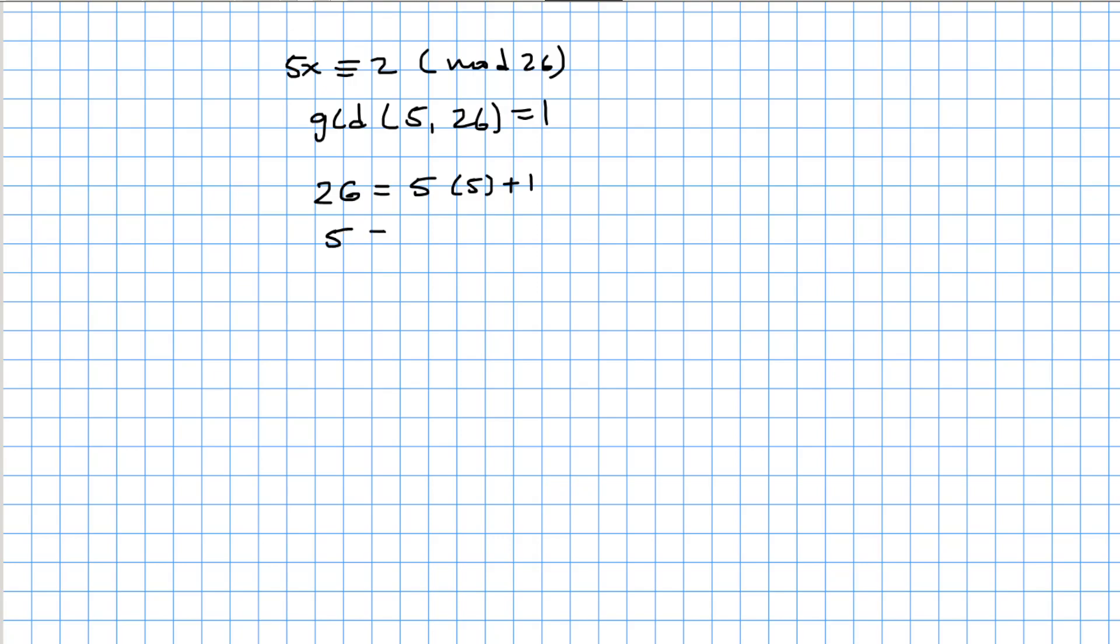And so we move the 5 over, and then we have the 1 here, and then we have 1 times 5 plus 0. So at this point, we can rewrite this as 1 is equal to 26 minus 5 times 5.